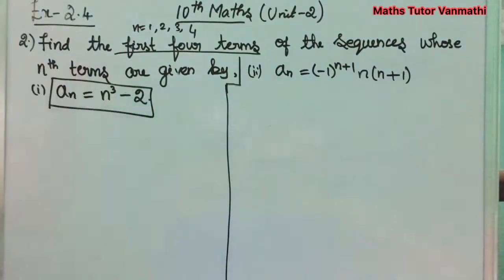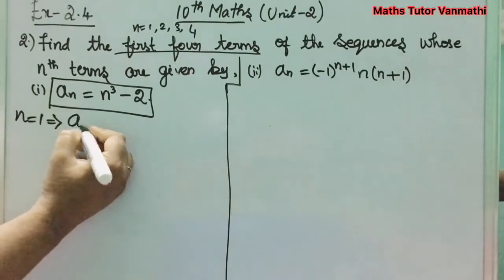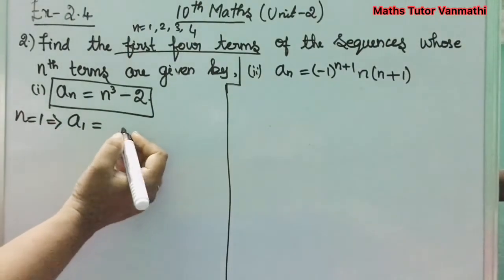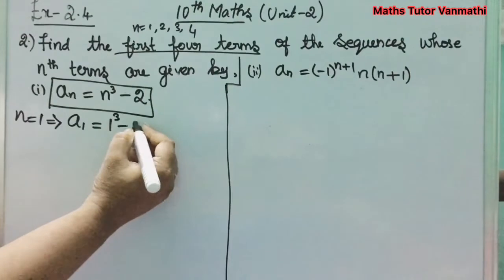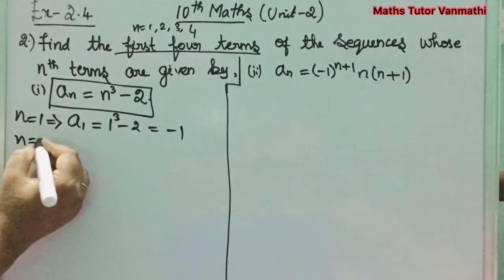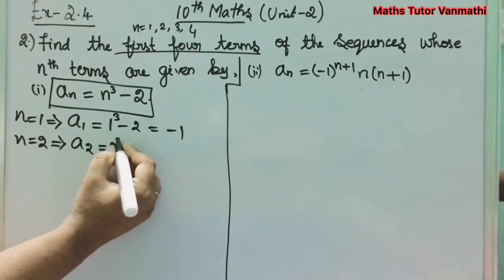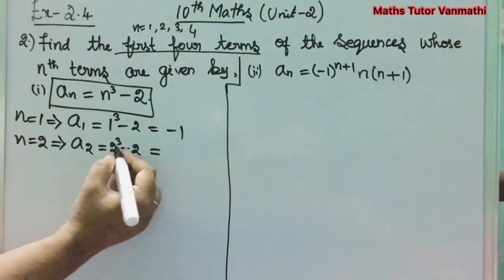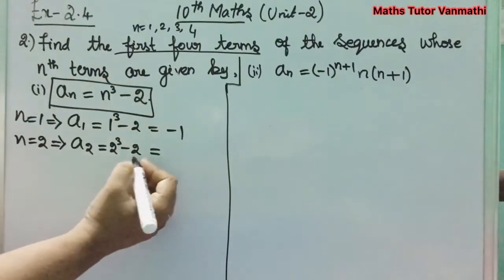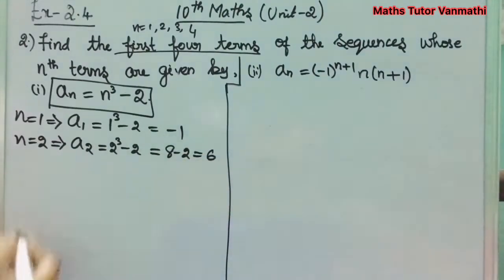Given general term a_n = n³ - 2. For n = 1: a_1 = 1³ - 2 = 1 - 2 = -1. For n = 2: a_2 = 2³ - 2 = 8 - 2 = 6.